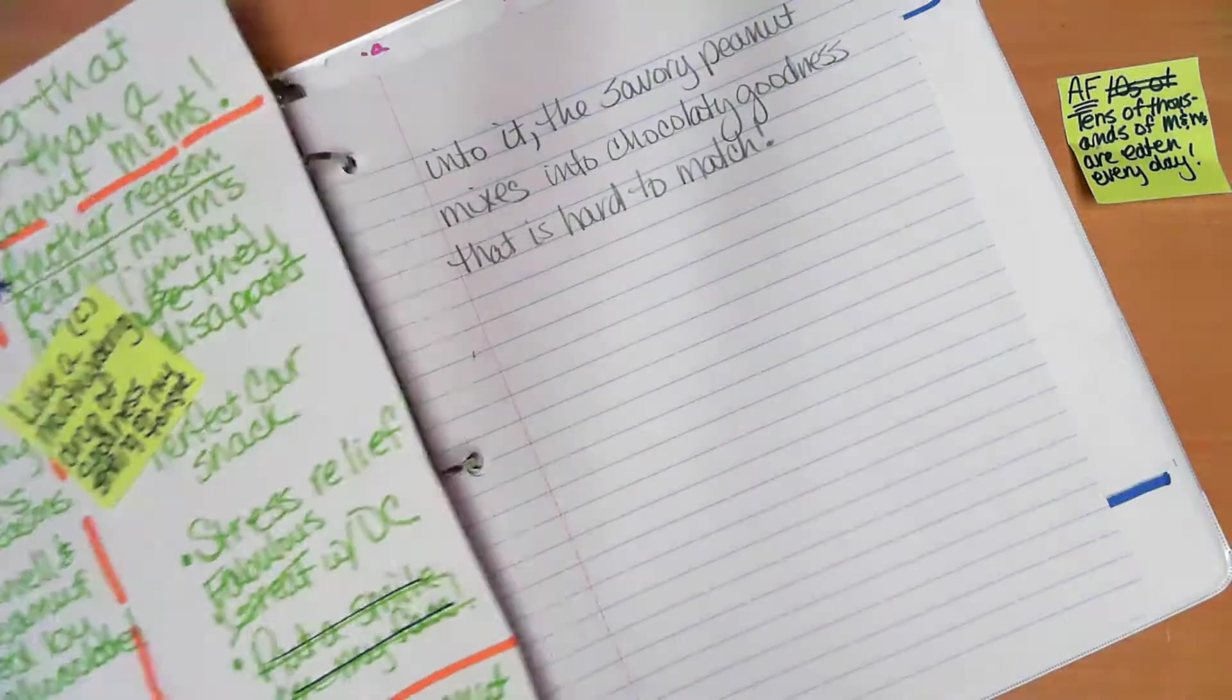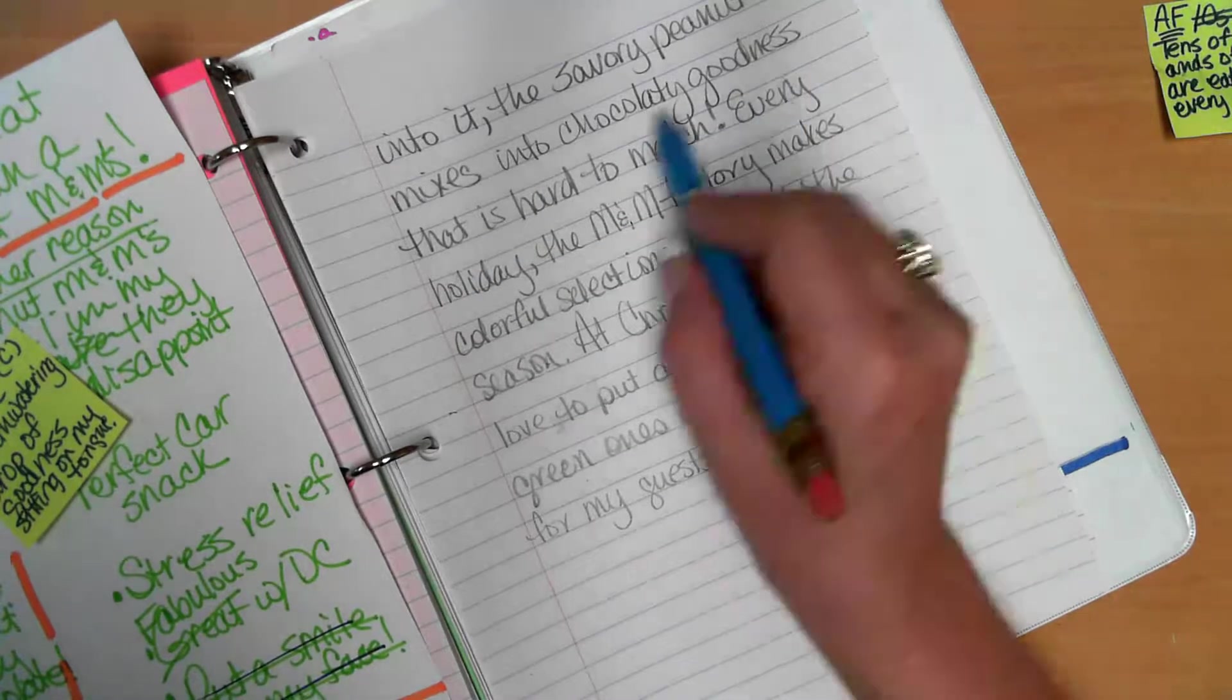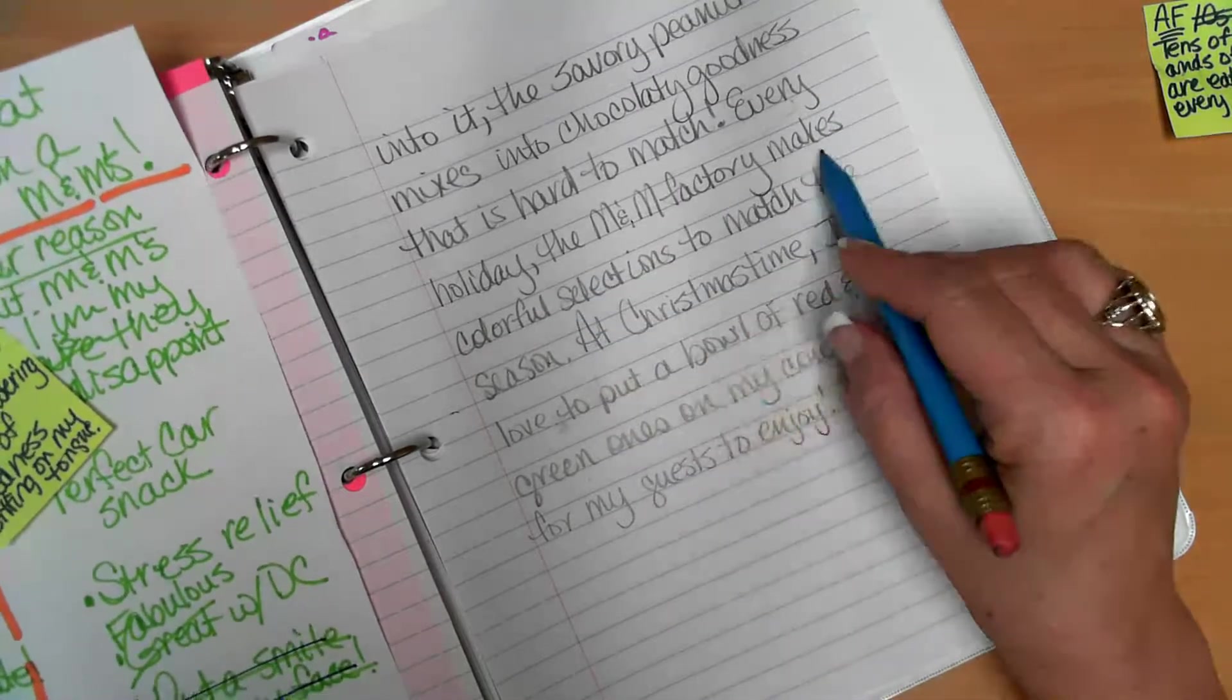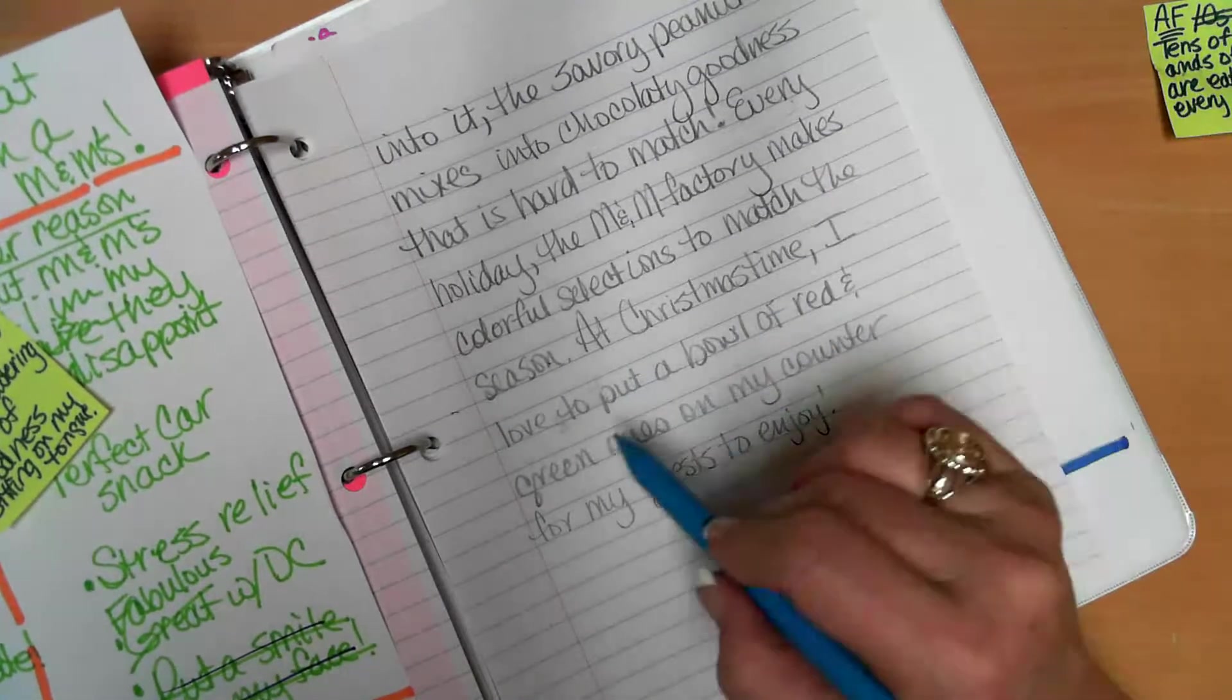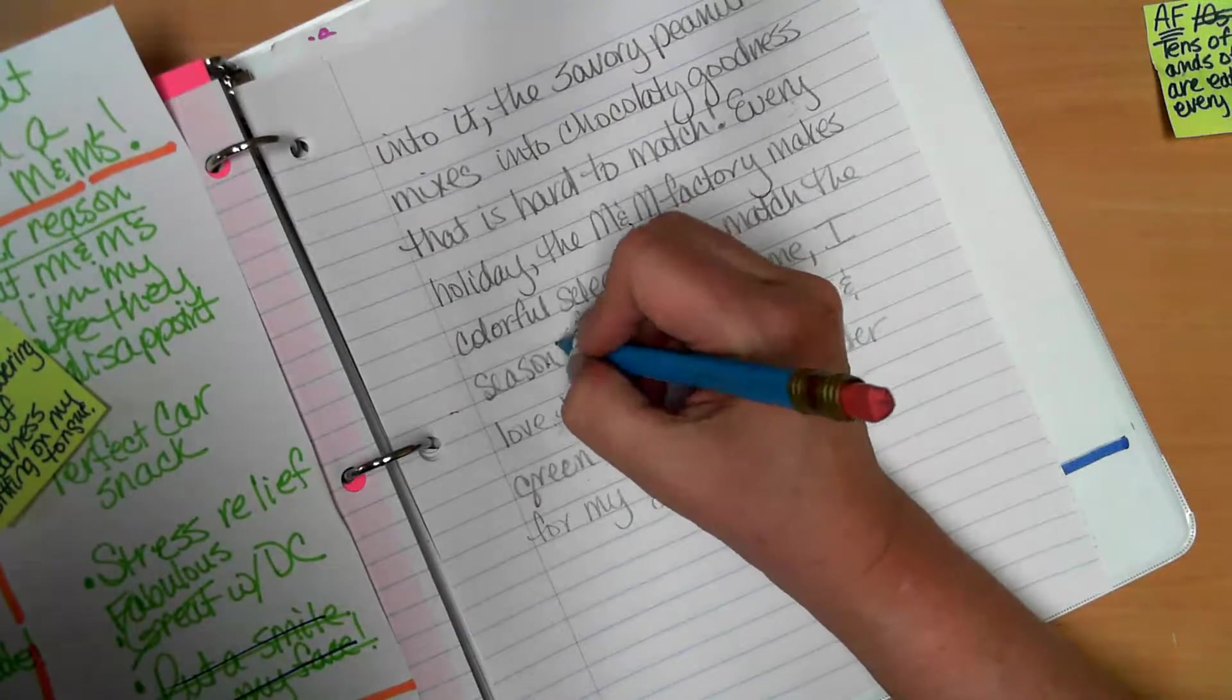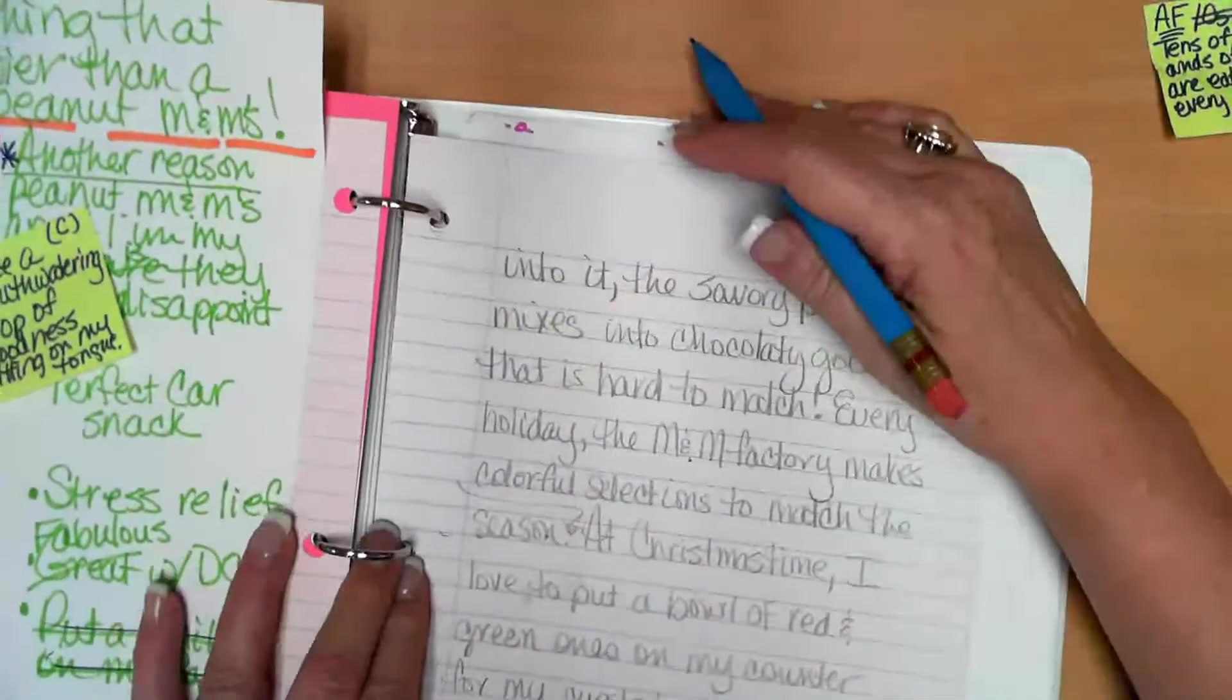All right, what's going to be next? Now I think I'm going to go ahead and take care of taking care of chocolatey goodness, taking care of the crunchy shells, sweet and savory. Now I want to talk about the change of colors. So I'm going to pause it and write that part. Okay, now here's the next part. I just ended with chocolatey goodness that is hard to match, and then I wrote this part about the change of colors. Every holiday, the M&M factory makes colorful selections to match the season. At Christmastime, I love to put a bowl of red and green ones on my counter for my guests to enjoy.